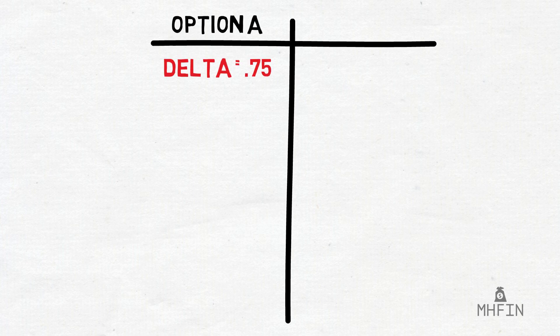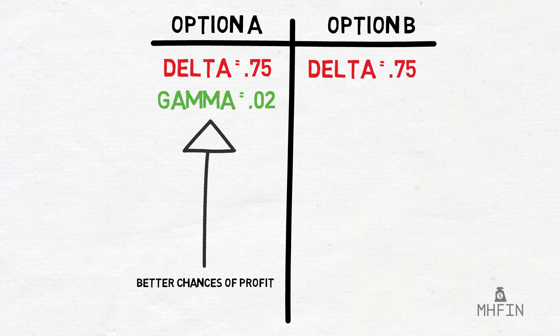If you can sit back and think about that, you can begin to grasp its effect on options pricing. If one option has a delta of 0.75 and a low gamma, that option in theory has a better chance of profit than an option with the same delta but higher gamma.